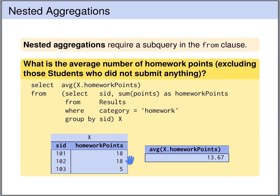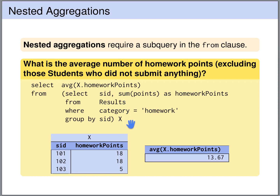In the outer query we select as output the average of x.homeworkpoints. So x consists of rows with homework points 18, 18, and 5, and in the outer query we make another aggregation which computes the average of these points. It returns a single row and the average is 13.66. So we have a nested aggregation: for each student we compute the sum of the points, and overall we compute the average of these sums.